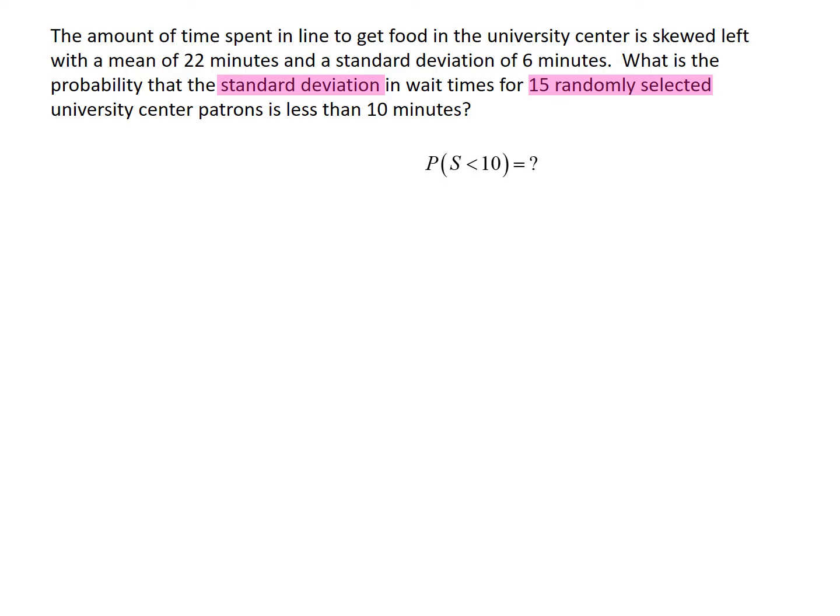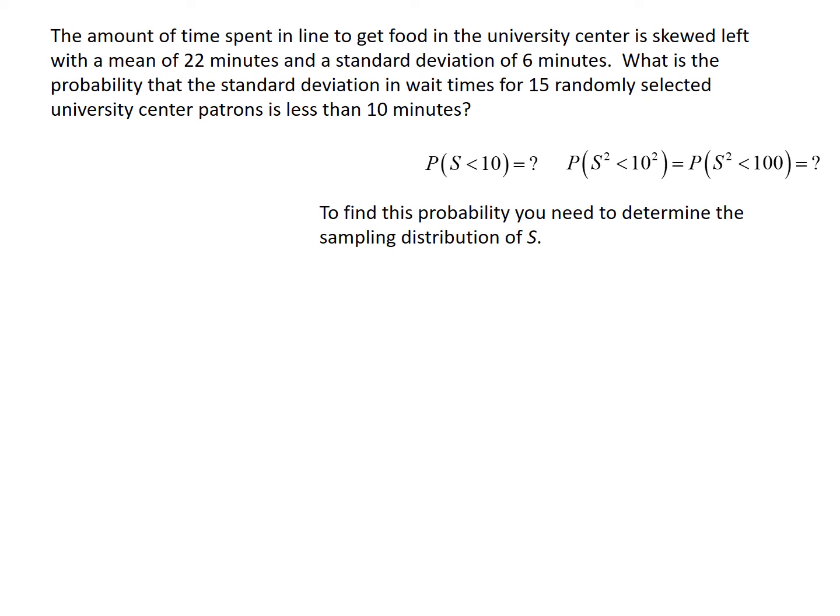In the previous two examples we were looking at s-squared, the sample variance. Any question about s is a question about s-squared and vice versa. The probability that s is less than 10 is the probability that s-squared is less than 10 squared — in other words, the probability that the sample variance is less than 100. So this question would be handled exactly the same whether it asks about the standard deviation being less than 10 minutes or the variance being less than 100 minutes squared — same question, because s and s-squared are directly related.